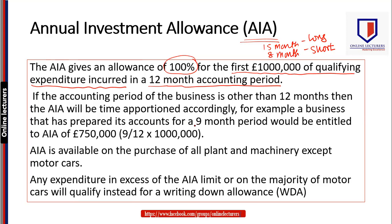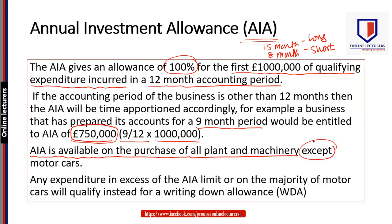For example, if the accounting period is 9 months, then the AIA limit is £1 million × 9/12 = £750,000. So if you have purchased any asset above £750,000, you will get £750,000 immediately as an AIA. An important exception: AIA is available on the purchase of all plant and machinery, but it is never available on a motor car. If you purchase a delivery vehicle, AIA is available, but for any kind of motor car, AIA is not available.